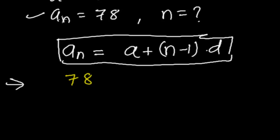Now aₙ equals 78 because aₙ is 78. Equals to a, the first term, that is 3, and we don't know the value of n, therefore n minus 1 times the common difference that is 5.